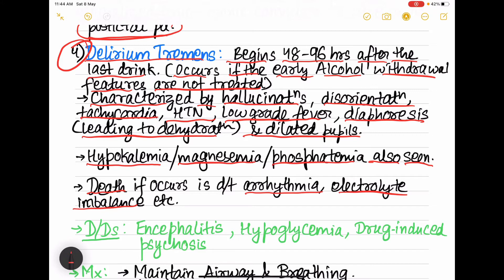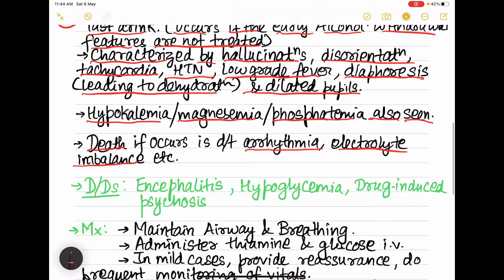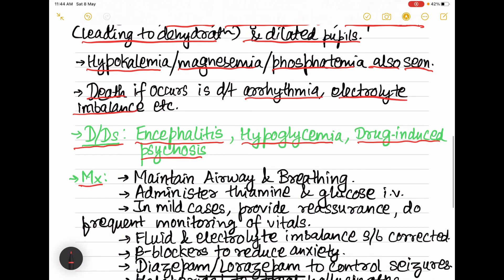Now what are the differential diagnosis for alcohol withdrawal? First is encephalitis, that is inflammation of brain, next is hypoglycemia, next is drug-induced psychosis.